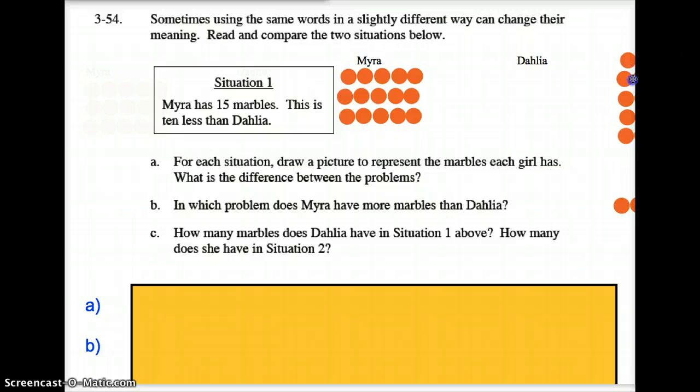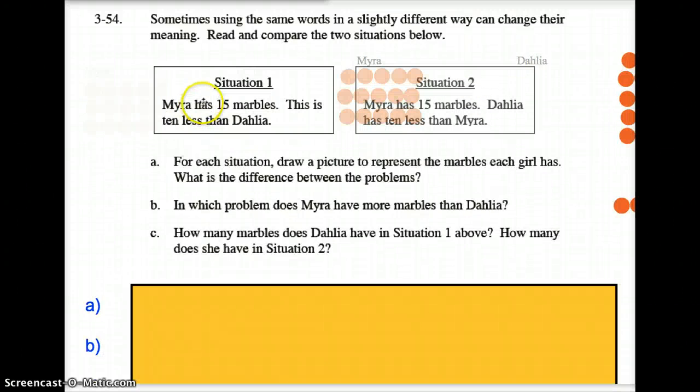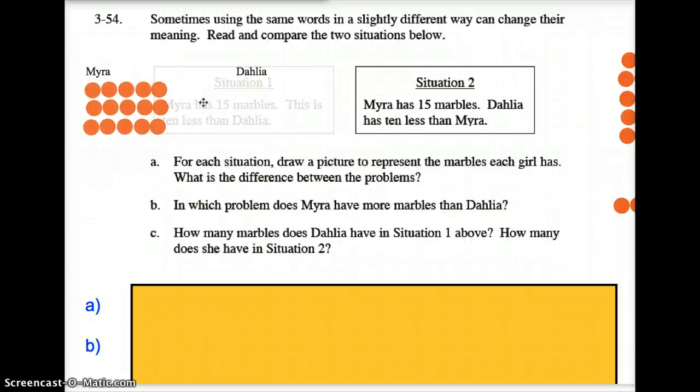Next, situation number two says Myra has 15 marbles, but Delilah this time has 10 less than Myra. So this time Delilah has fewer marbles than Myra, which means Delilah must simply have five marbles. Hopefully that makes very good sense to you.